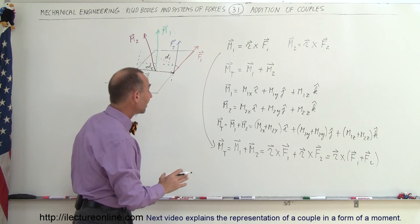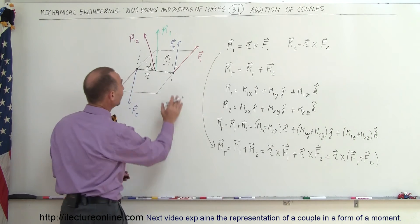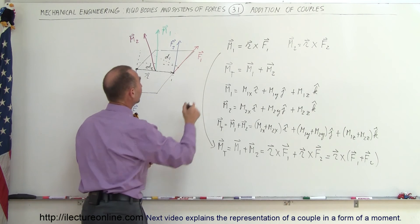Which means, that if you want to find the sum of a couple, what you can do is you can simply add the two vectors together, F1 and F2, let's do that.